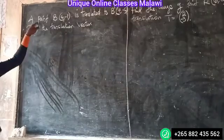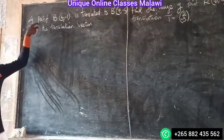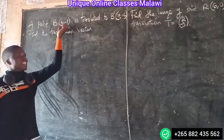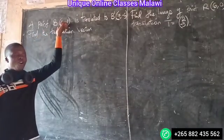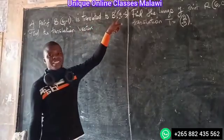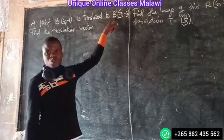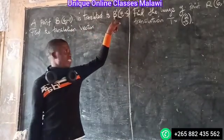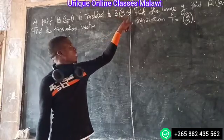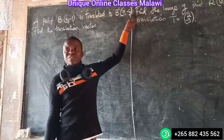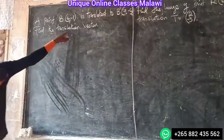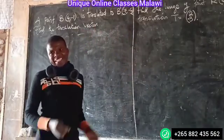I have this question. I know the point B, which is (4, 1). Is it translated to B-prime at (7, -6)? Now we find the translation vector.